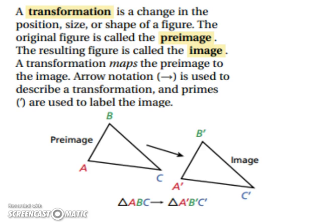We use arrow notation and primes to help us figure out which one is the pre-image and the image. So the pre-image has no primes. Your first image will have one prime. If you were to create a second image, then that one would have two primes.